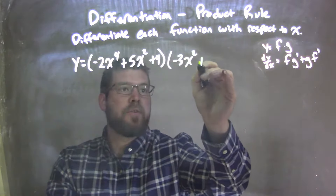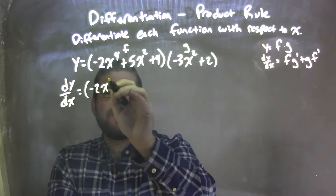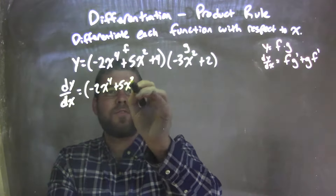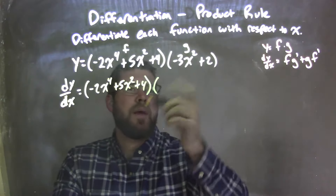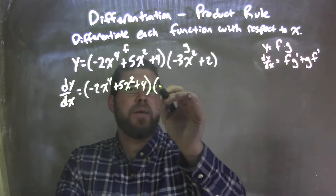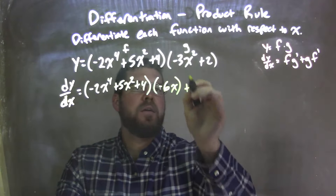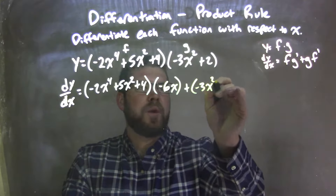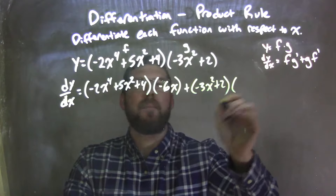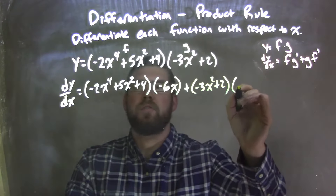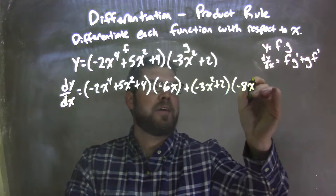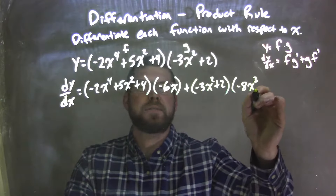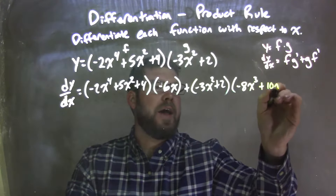So when I apply the product rule, when I take my derivative dy/dx, I'm going to take my f — negative 2x to the 4th plus 5x squared plus 4 — and multiply that by g prime, g prime being negative 6x, taking the derivative of our g. Plus g, which is negative 3x squared plus 2, times my f prime, f prime comes out to be negative 8x to the 3rd plus 10x.